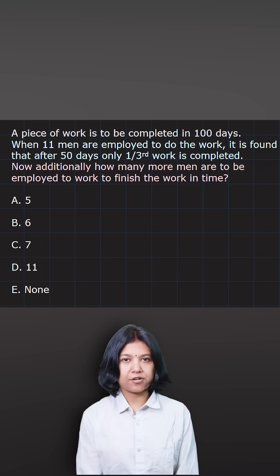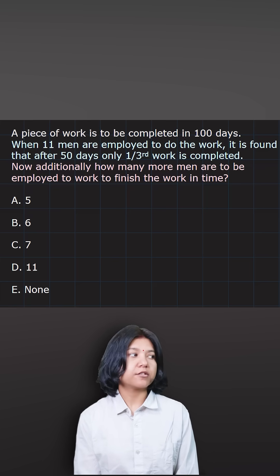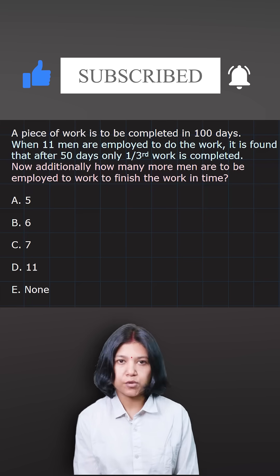A piece of work is to be completed in 100 days. The main information here is there are 11 men who are employed and it was found that these 11 men took 50 days to complete only one third of the work.